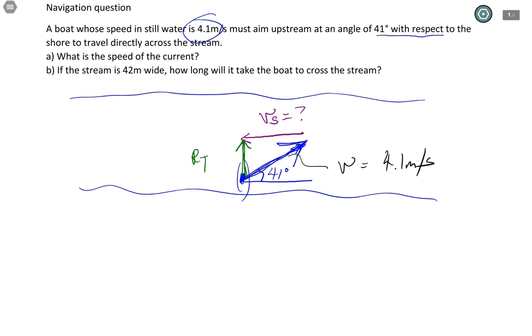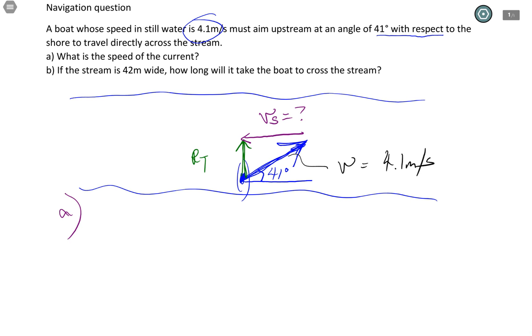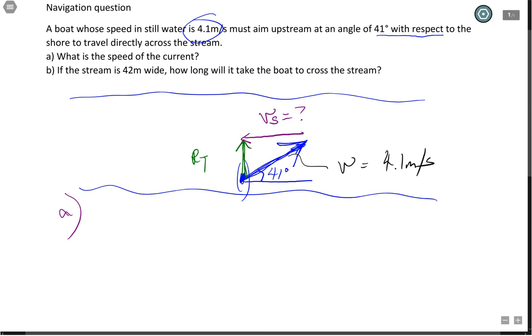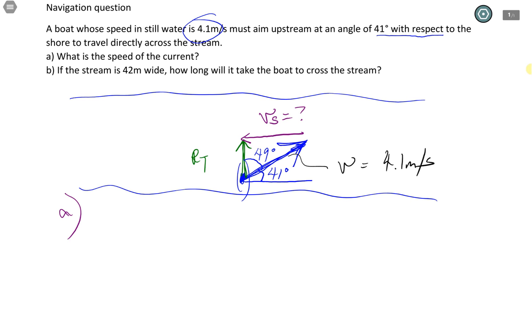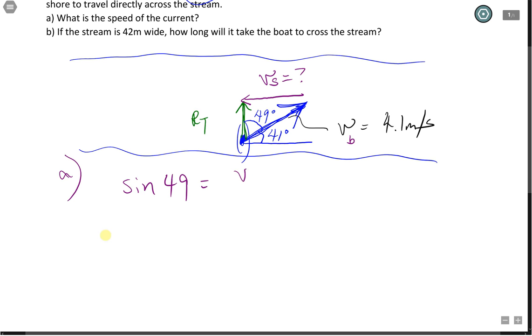A. What is the speed of the current? So we want Vs. To get Vs, there's a few ways. First of all, we probably want to label some angles. This one over here, this is the complementary angle, which is 49 degrees. So if I want to find Vs, I can use sine of 49. Sine of 49 gives me my Vs over my Vb.